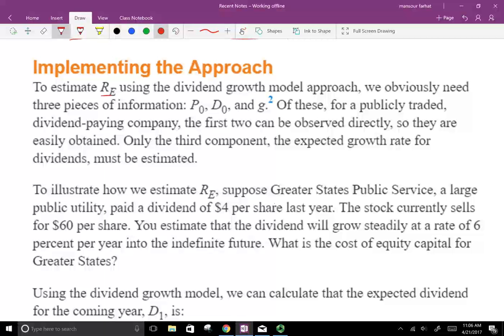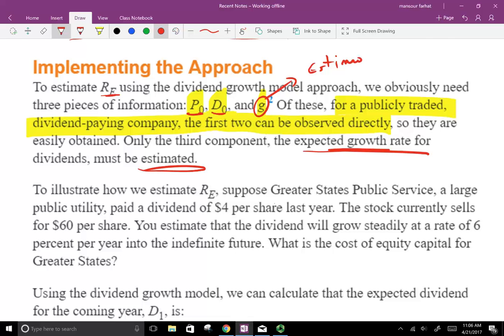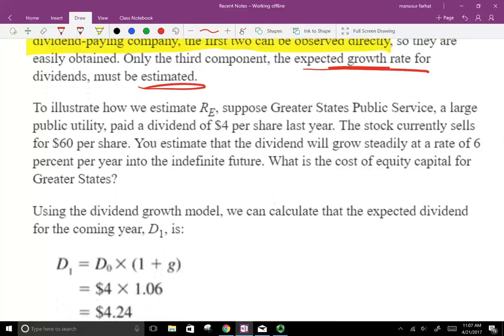To estimate the return on equity using the dividend approach model, we obviously need three pieces: the price today, the dividend paid today, and the growth rate that the company is going to incur. For a publicly traded, dividend paying company, the first two can be observed directly. So it's easy to look at the price today and the dividend today. Only the third component, the expected growth, must be estimated. So we don't know G. Once you have an estimate, it means there's room for error. That's going to be one of the weaknesses - you're estimating G to find the required rate of return.